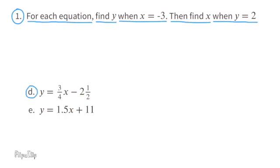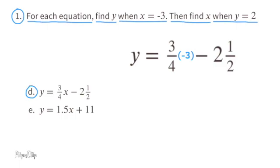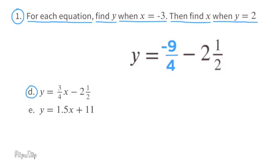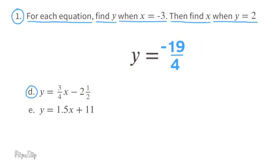Part d: y equals 3 fourths x minus 2 and a half. Substitute x with negative 3: 3 fourths times negative 3 over 1 gives negative 9 fourths. The mixed number 2 and a half equals 5 halves, which equals 10 fourths. So y equals negative 9 fourths minus 10 fourths, which equals negative 19 fourths when x equals negative 3.